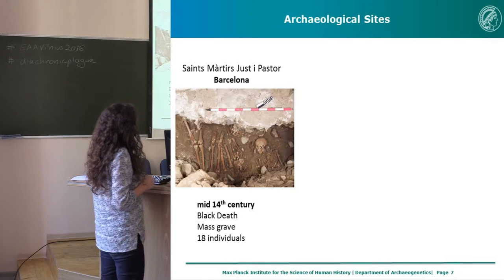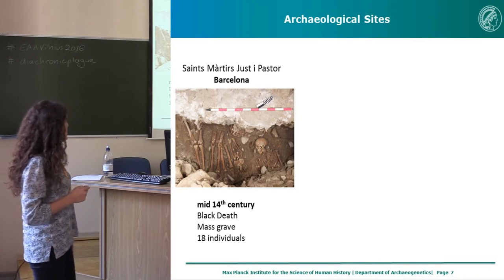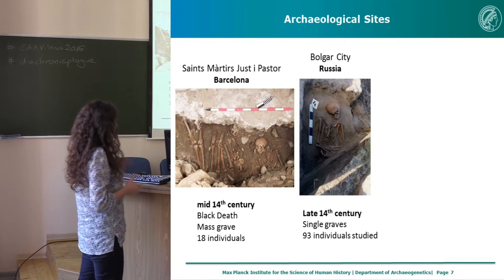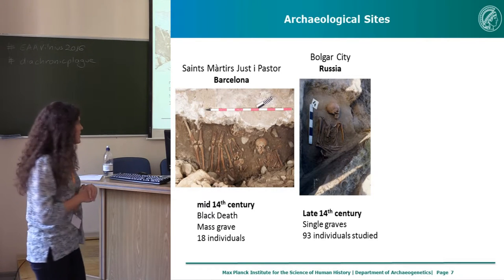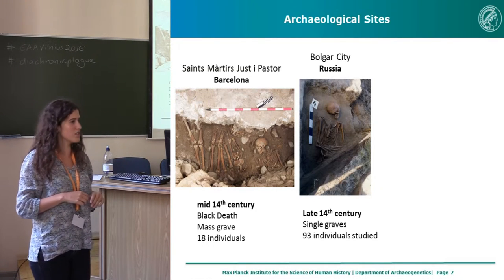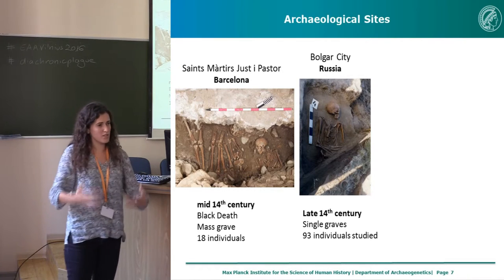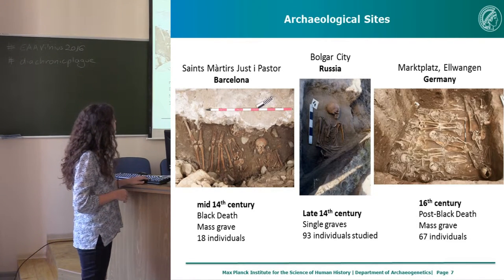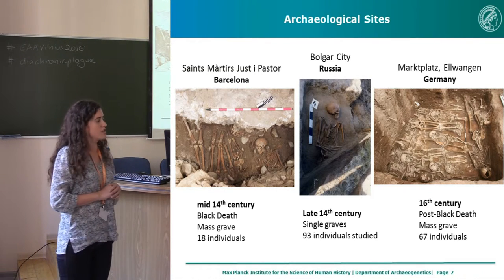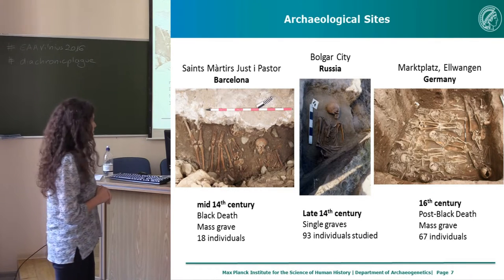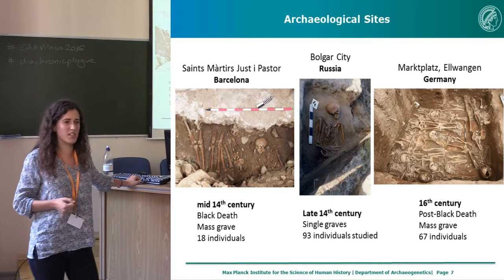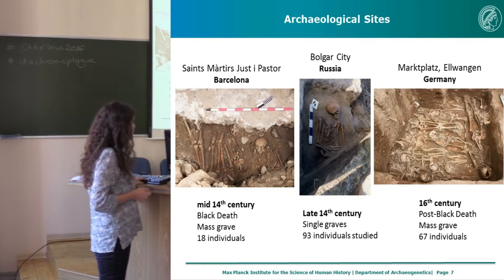The sites we looked at were: first, a site in Barcelona that most likely coincides with the Black Death event in the 14th century; second, a very special site in Bulgar City in Russia from the second half of the 14th century, so after the Black Death; and third, a site from southwestern Germany in Ellbangen from an outbreak of plague that happened in the 16th century.